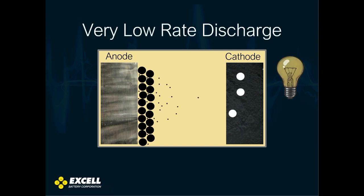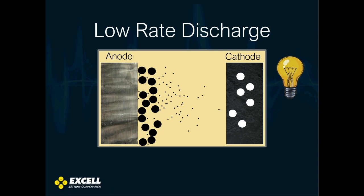When you try to discharge the cell at a very, very low rate, you have what's called ionic transfer from the anode to the cathode — those are the little tiny dots shown. At very low rates, current can get through the pore areas in the lithium chloride layer, the big black dots shown on the left. So you don't really need to disturb the passivation film to deliver a low current.